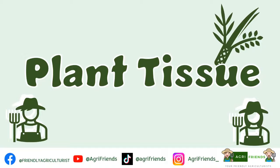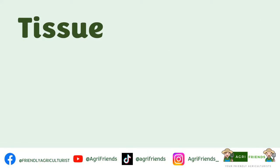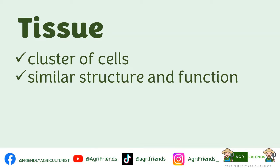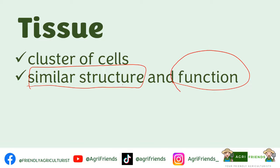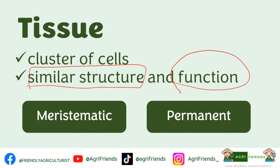For today's lecture, we are going to talk about plant tissue. So what is a tissue? A tissue is a cluster of cells or a group of cells that typically have similar structure and work together for a specific function. They can be classified into meristematic and permanent.